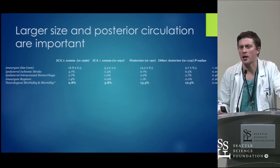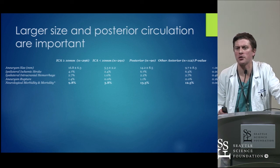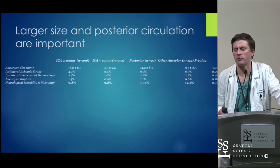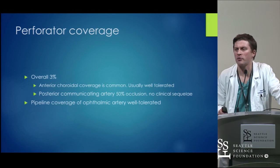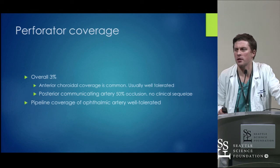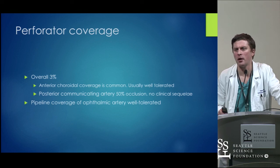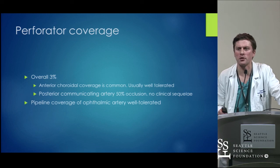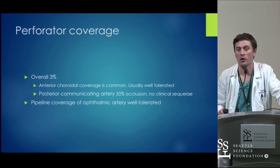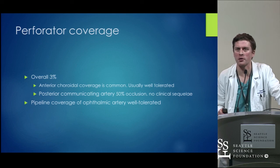Posterior circulation and larger aneurysms seem to have a slightly higher complication rate, which is reflected anecdotally — very large aneurysms are more complex to navigate. Coverage of the posterior communicating artery for internal carotid artery aneurysms doesn't seem to have clinical sequelae. If you've got a large fetal posterior communicating artery, it will stay open. If the patient doesn't need it because they have good posterior circulation from the vertebral arteries, it may clot off but fills from the vertebral circulation — we haven't seen problems with that.